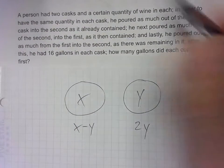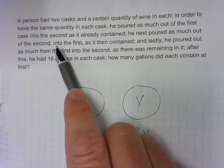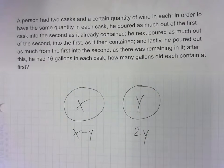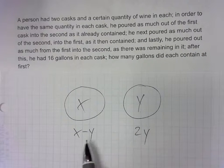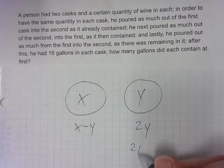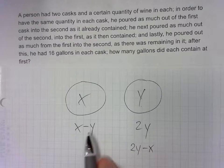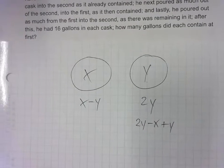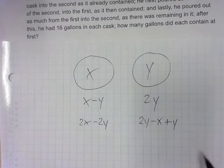So it doesn't say anything about doubling, but by the language you can tell. Then we pour as much out of the second into the first as then contained. Okay. So that means we're going to do the same thing back this way. So we're going to take this much out of this one. So this is now going to be 2Y minus X. And then a minus would be plus Y. So a double negative there. And then that's going to double this. So this is now 2X minus 2Y.